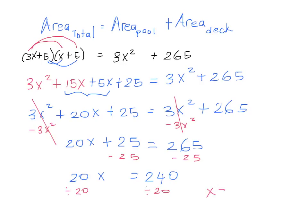So x equals 12. Going back to our original question where we had the swimming pool with width x and length 3x, we can now say the dimensions of our swimming pool are x = 12 by 3x = 36. So the swimming pool is 12 by 36 meters. Now we can drop those units back on, because it's really not good to leave off your units. And now we're done.